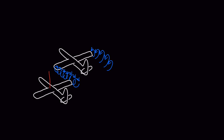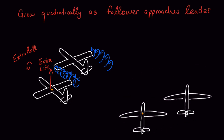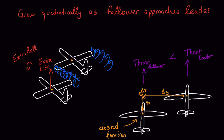To do this, I simply add a lift force and a roll moment to the follower that grows as a function of the distance to the desired position, which we'll say is around here. Later, we'll evaluate whether the follower uses less thrust than the leader once it begins benefiting from this induced lift.